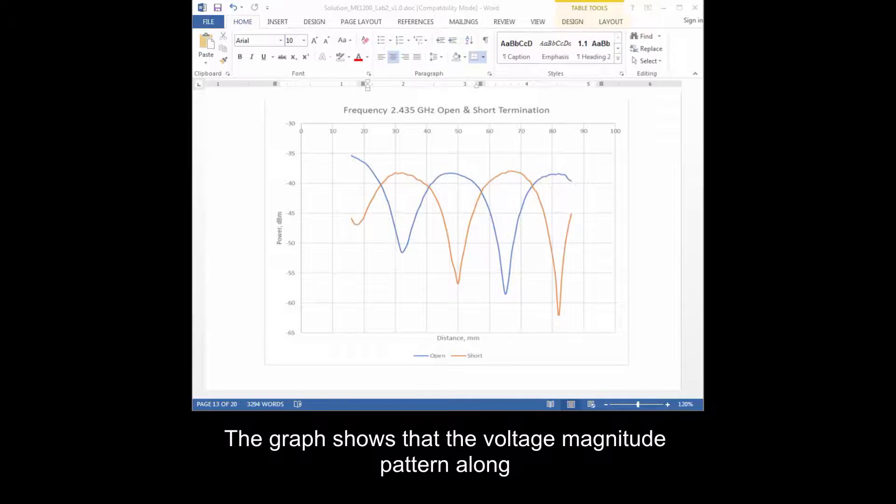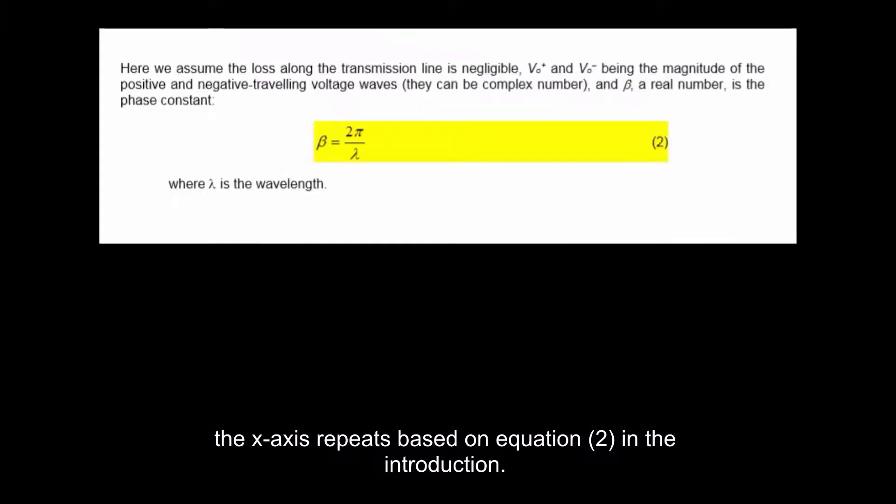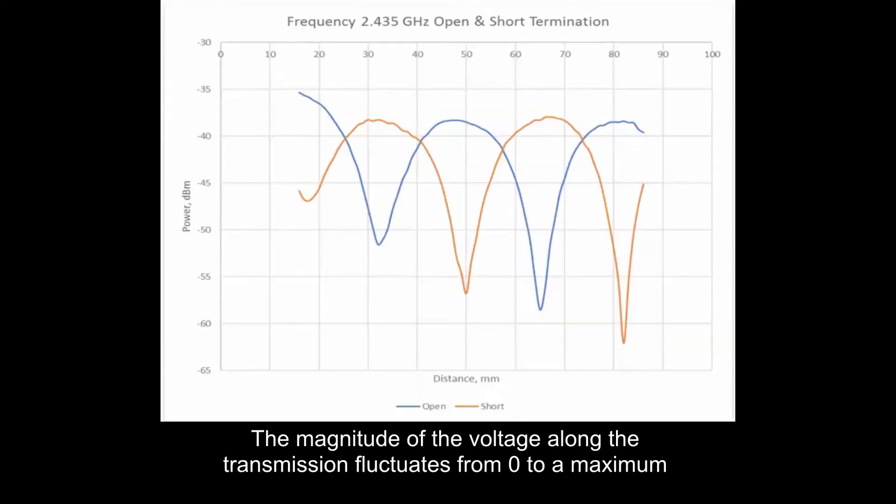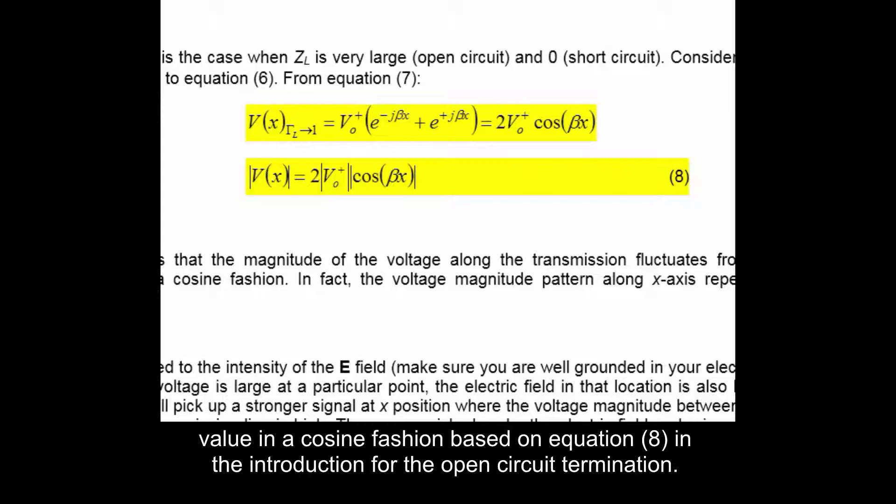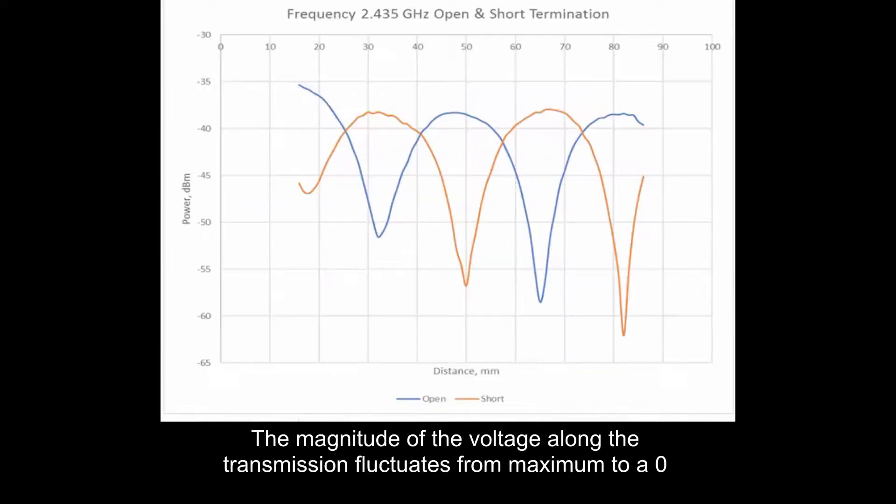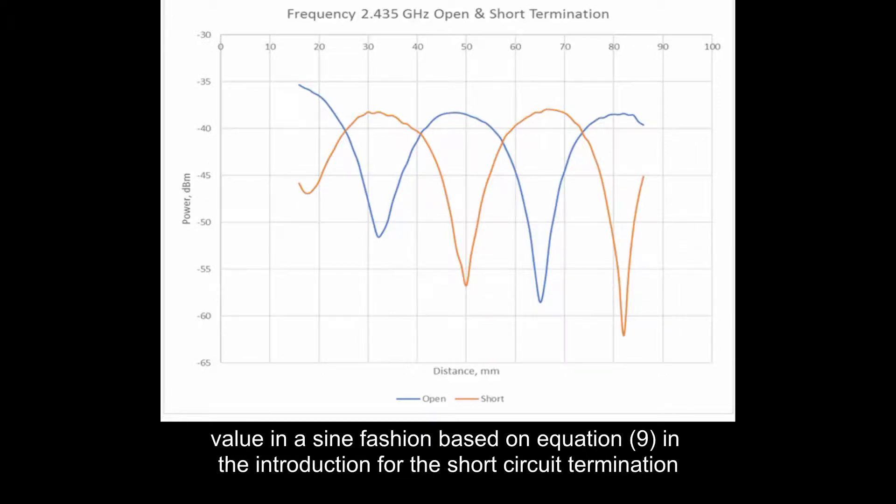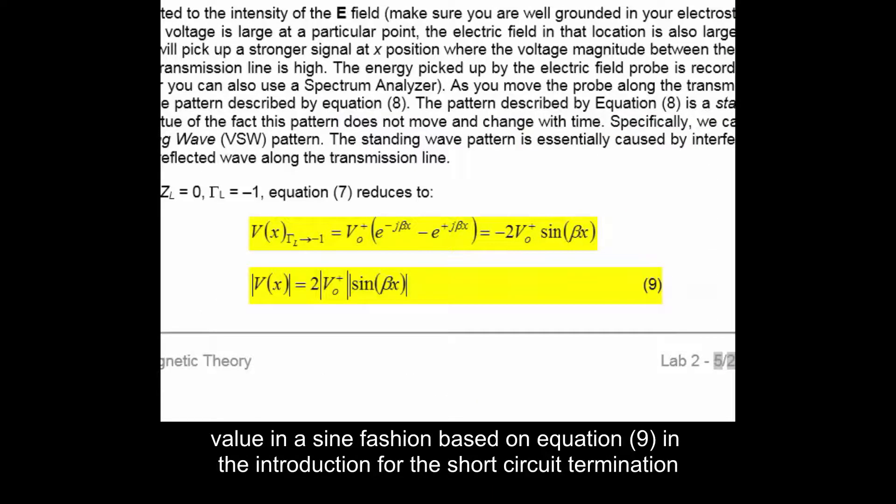The graph shows that the voltage magnitude pattern along the x-axis repeats based on equation 2 in the introduction. For the short circuit termination, the magnitude of the voltage along the transmission fluctuates from maximum to a zero value in a sine fashion, based on equation 9 in the introduction.